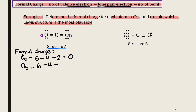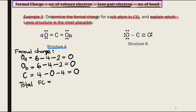For oxygen labeled B, it is also 6 valence electrons minus 4 lone pairs minus 2 bonds, so the formal charge for oxygen B is also 0. For carbon: number of valence electrons is 4, no lone pairs, and number of bonds is 4, therefore the formal charge for carbon is also 0.